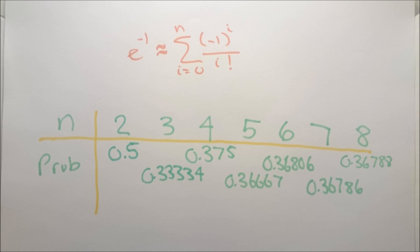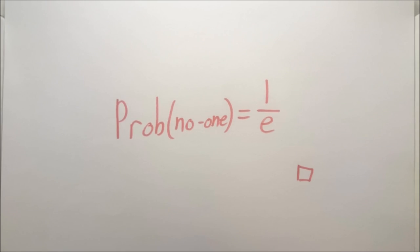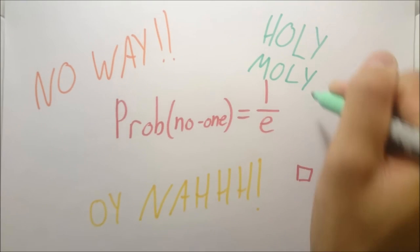This means that for any group of friends where there are 6 of you, 20 of you, a thousand of you, we have the probability that no one draws their own name in secret easter bunny of 1 over e will stay the same. Strange right?